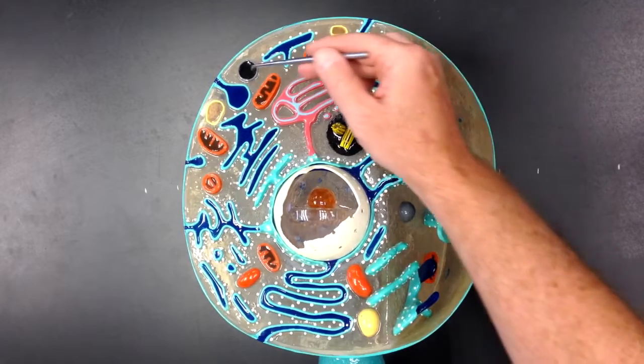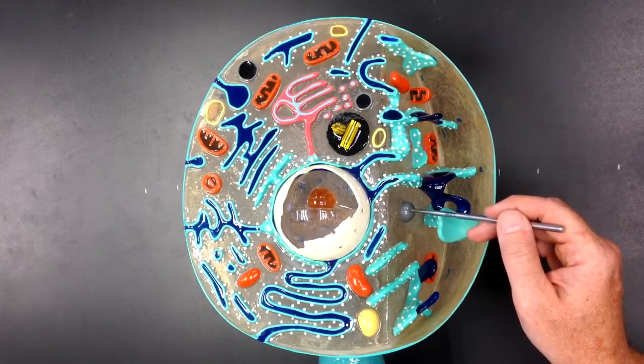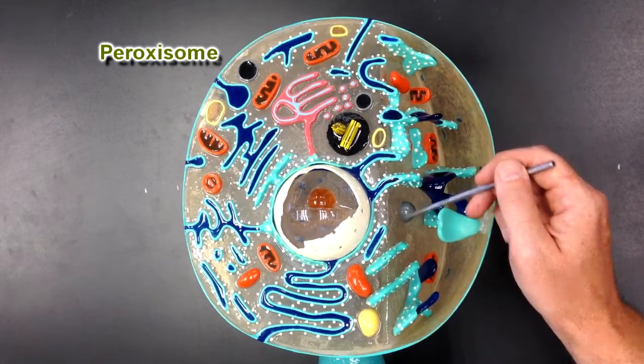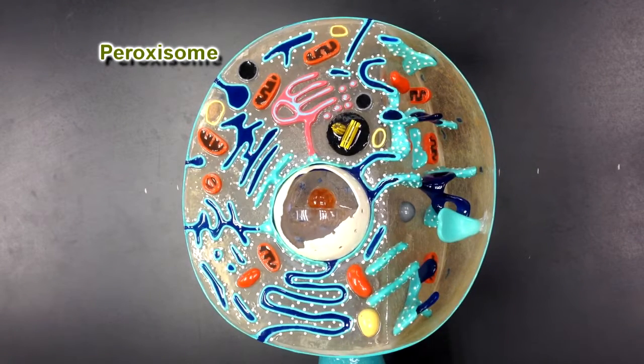This right here and this, as well as this gray vesicle right here, this would be a peroxisome. Peroxisomes have peroxides in them that will help to break down substances that enter the cell.